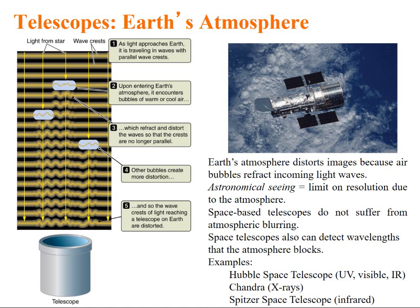What happens when light passes through earth's atmosphere? As light approaches earth, it is traveling in waves with parallel wave crests. But, upon entering earth's atmosphere, it encounters bubbles of warm or cool air. This refracts and distorts the wave so that the crests are no longer parallel. So, other bubbles also create much more distortions. So, the wave which is reaching the telescope is distorted. So, earth's atmosphere distorts image because air bubbles refract incoming light waves. So, astronomical seeing, that is a term coined to describe the limit on resolution due to atmosphere.